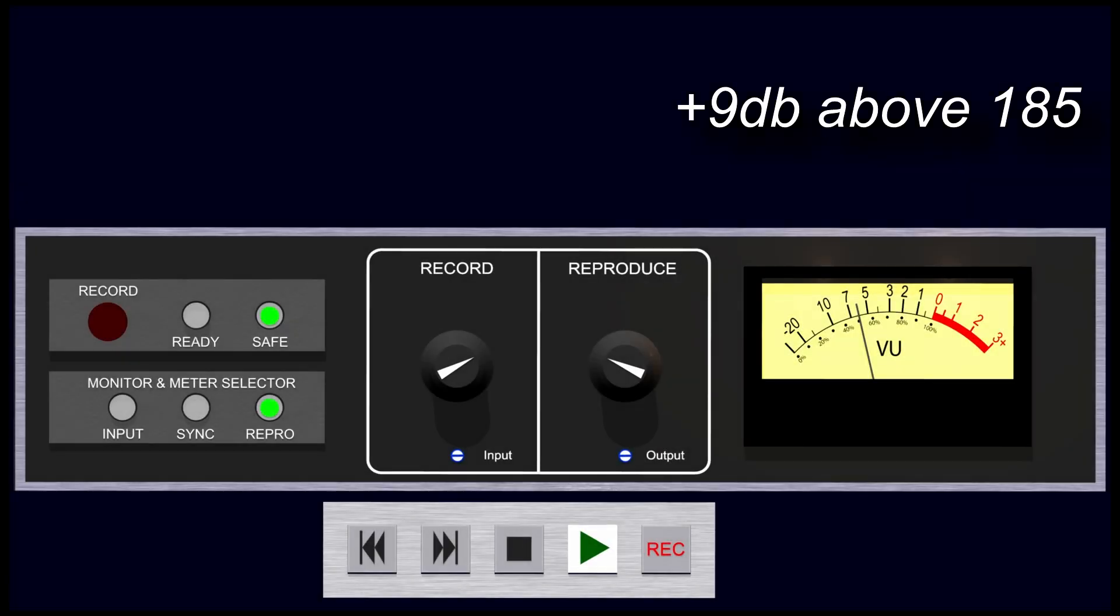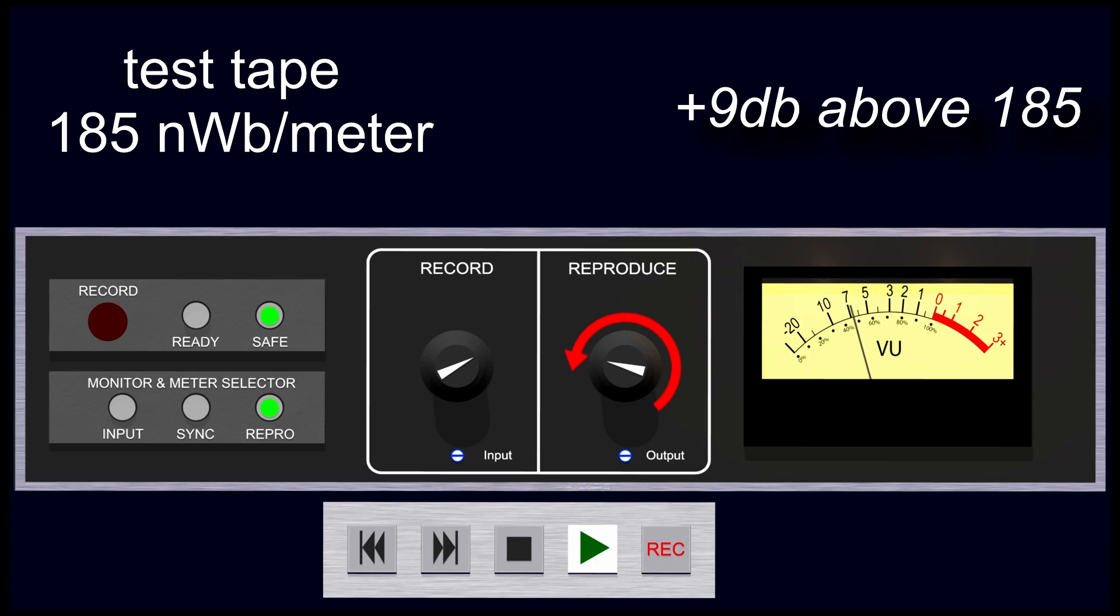The last generation of analog recording tape is capable of recording 9 dB hotter than 185 nanowebers per meter. So we'd set our playback level at minus 9, and our record level we would bring up 9 dB to 0 VU.